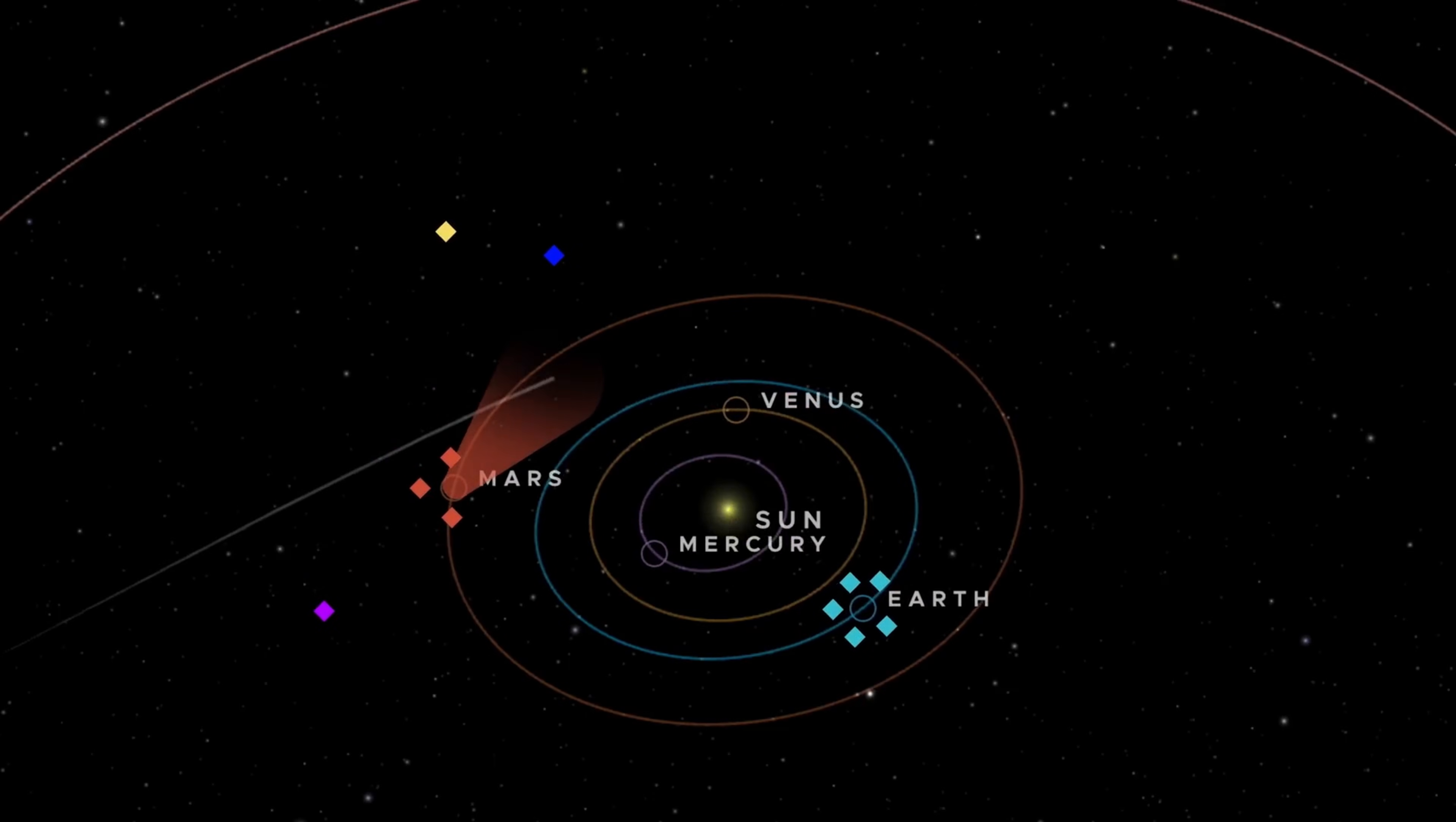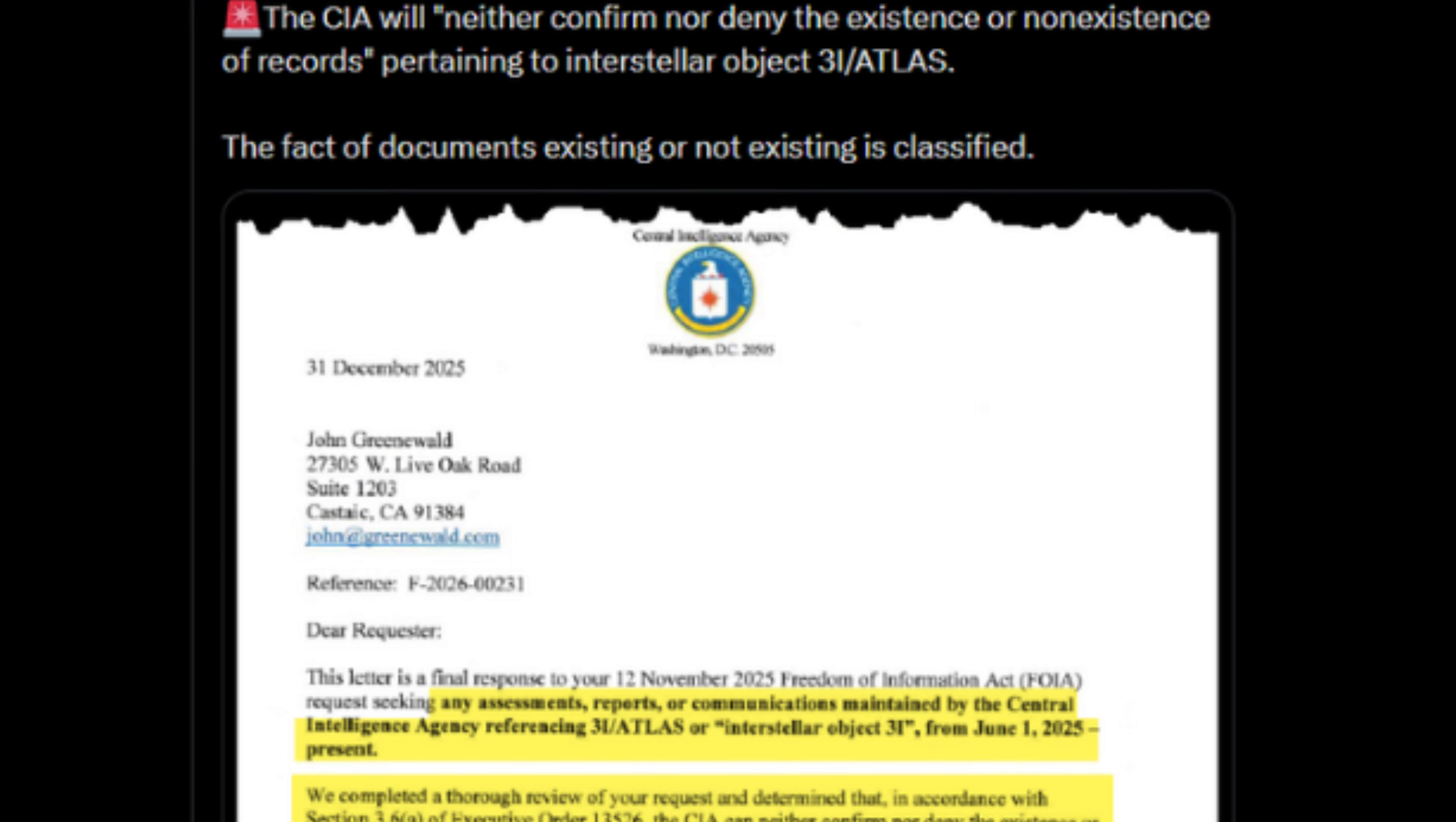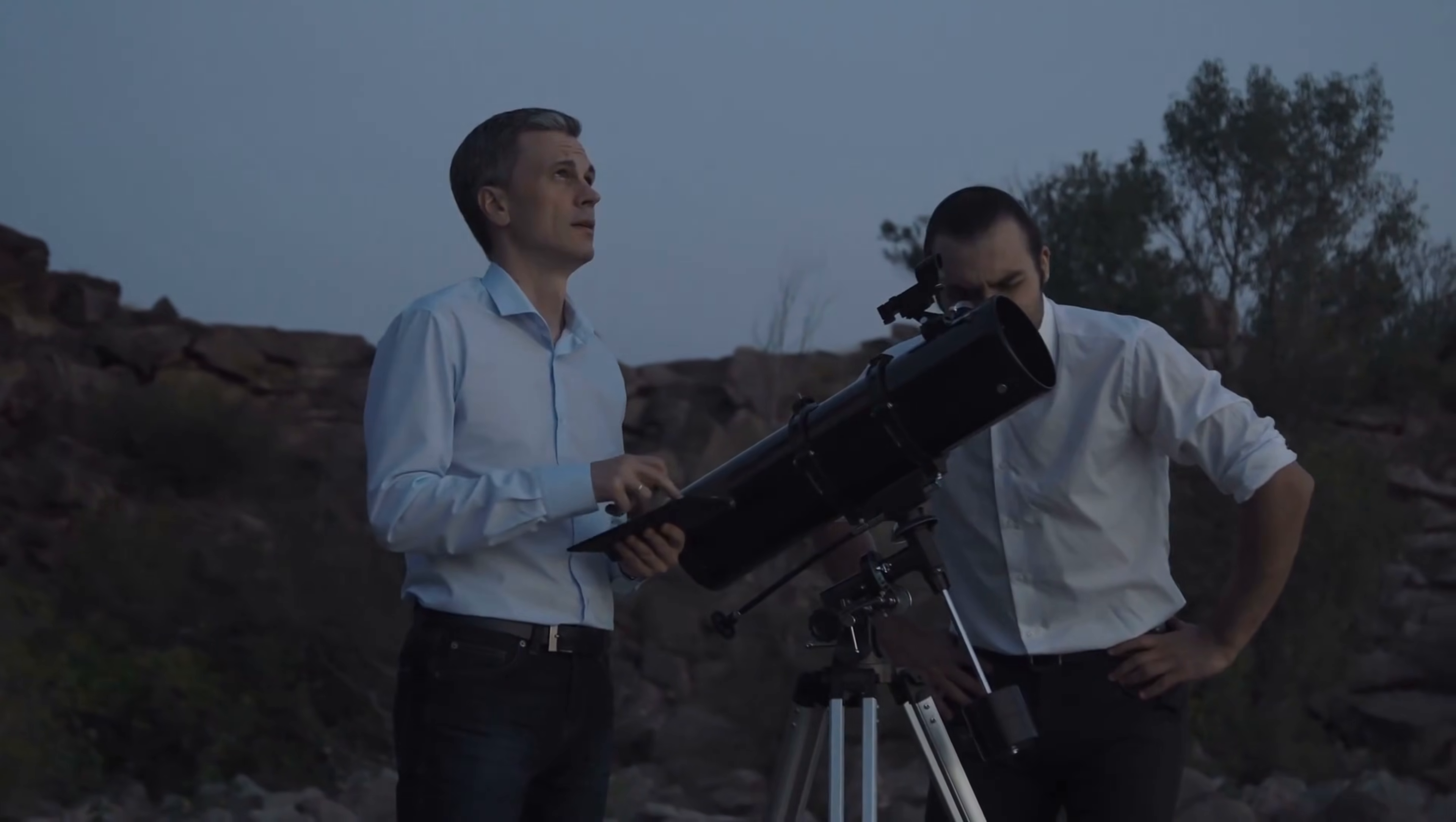The discovery of 3I Atlas has raised far more questions than it has answered, leaving the scientific community and the public alike grappling with its mysterious nature. From the very beginning, this interstellar object has shown behavior that challenges our understanding of what is possible in the cosmos. It behaves in ways that defy our understanding of comets, and its unique characteristics suggest that there may be more to this object than a simple interstellar traveler. The CIA's refusal to comment on the object's records only adds to the intrigue. Are we dealing with a mysterious cosmic event, or is 3I Atlas something far more extraordinary, something the authorities are not yet ready to reveal? As scientists continue to investigate, one thing is certain: the truth behind 3I Atlas could be far more significant than we've been led to believe.